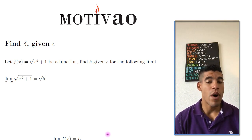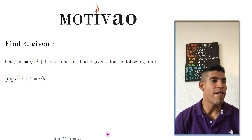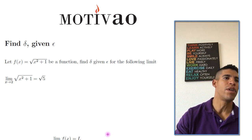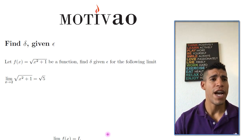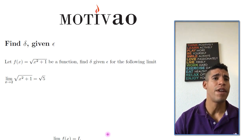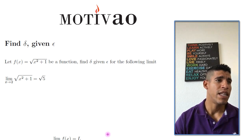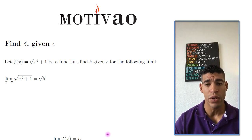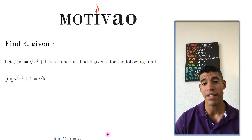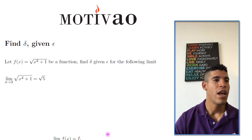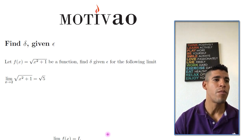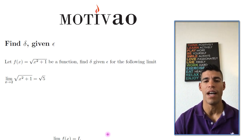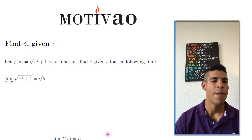The question is: let f of x equal the square root of x squared plus 1. Find delta given epsilon for the following limit — the limit as x approaches 2 of the square root of x squared plus 1 equals the square root of 5.